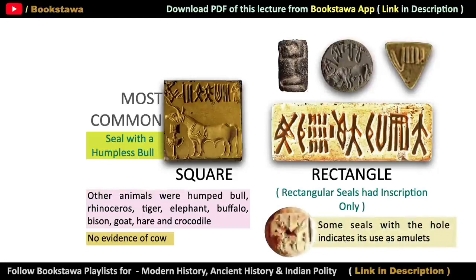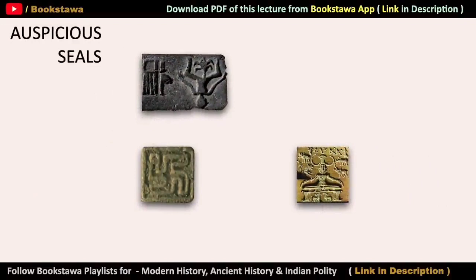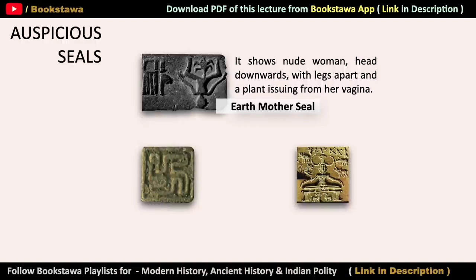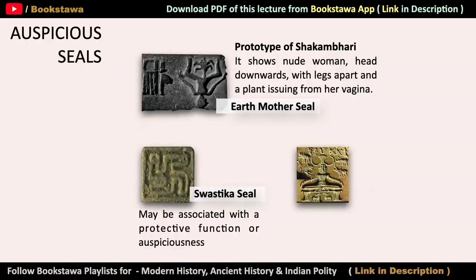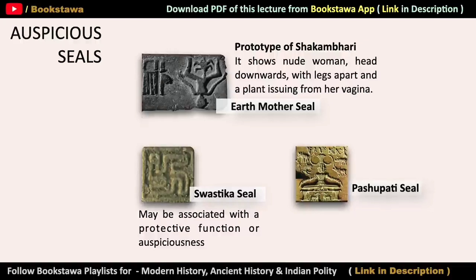There used to be a hole-like feature in the middle of some seals, from which it seems that people must have been wearing these seals like a locket around their neck. Some seals also had religious type imagery on them, like the Earth Mother Seal, which features a nude woman standing on her head with legs apart and a plant growing out of her vagina — believed to represent Goddess Shakambari. Swastika seals have also been found, which may have been used for a protective function.